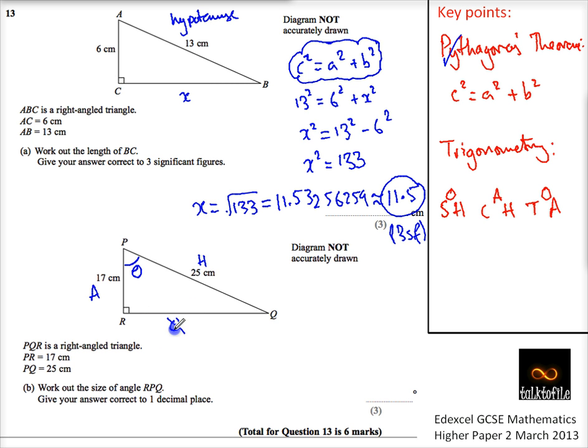So, I don't want that. I want the 17 and the 25, so I want, if I look here, I want the cosine. I want the cosine of theta is equal to 17, the adjacent, divided by 25.